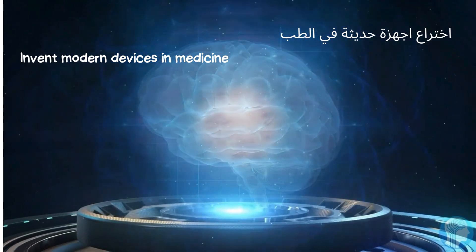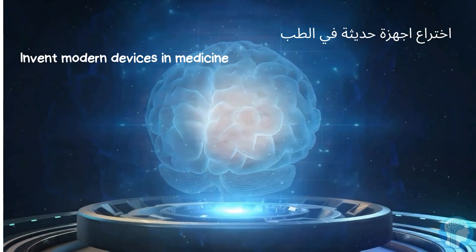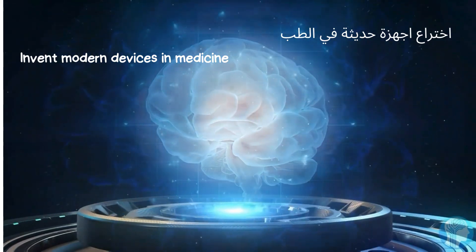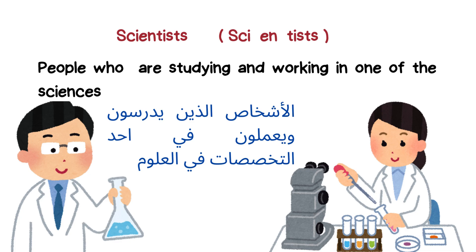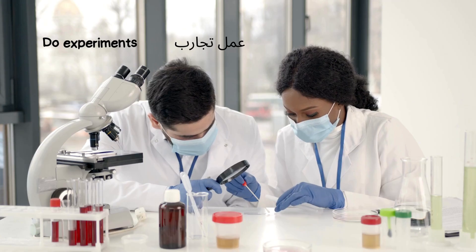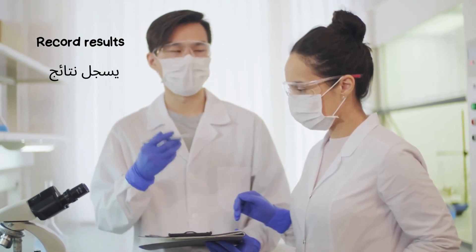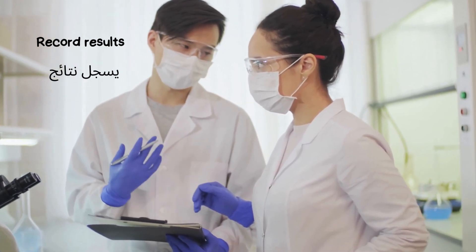Now we want to know the people who study and work in science, or in one of the sciences. They are called scientists. A scientist is a person who studies and works in one of the sciences — for example, studying living organisms, studying how to mix substances, or any topic of the sciences. They do experiments, write the results, and record the results.